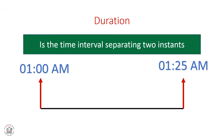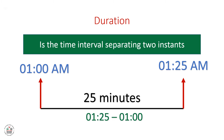Suppose an event starts at 1 a.m. and ends at 1:25 a.m. To calculate the duration of the event, we have to subtract the final time minus the initial instant. So we write 1:25 minus 1:00, which gives 25 minutes — and this is the duration of the event.